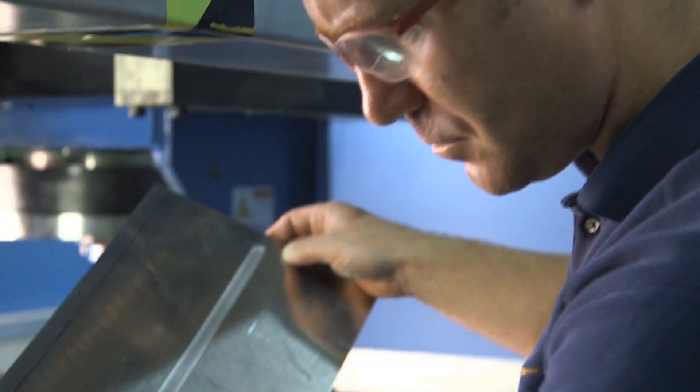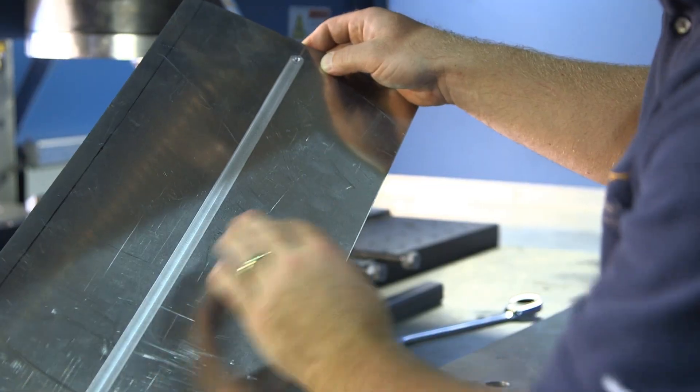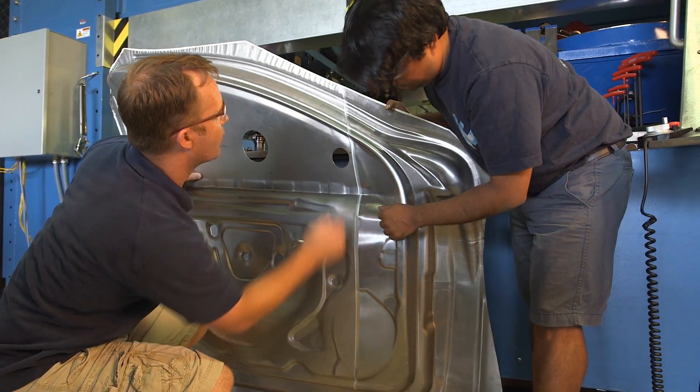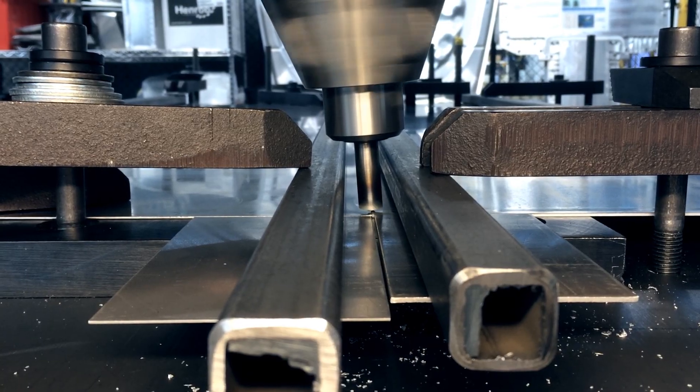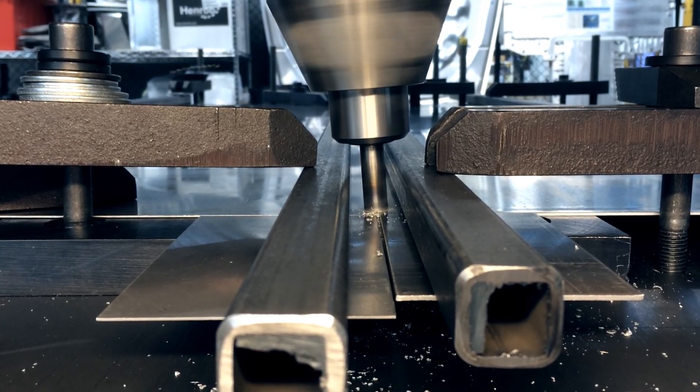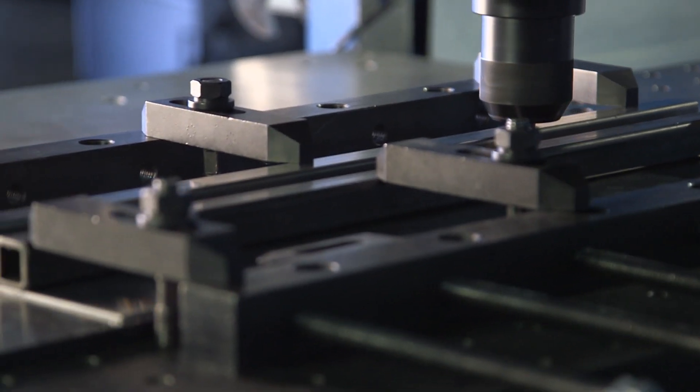One of the challenges to more widespread use of aluminum in automobile construction is joining. Friction stir welding is a process that allows us to join two materials together without ever melting them. We use a tool which is rotated and plunged into the interface of two abutting plates and then stirred down that interface in order to locally forge the materials together.